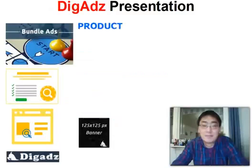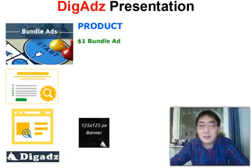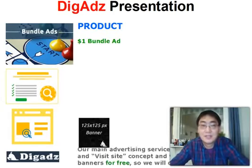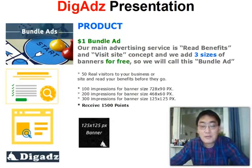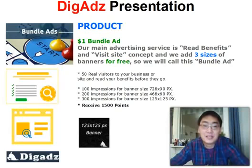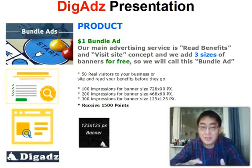You can start for free or start at one US dollar. What you do is buy our product, which is a bundle ad. The main advertising concept here is read benefits and visit site, with three sizes of banners included free. For one dollar you get 50 real visitors to your business or site, hundreds of banner impressions, and 1500 points.